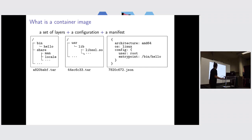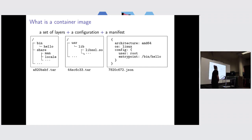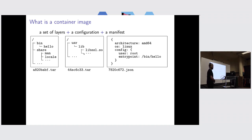The second type of artifact is a configuration file. It's basically a JSON file that describes how to run a container and also some metadata. Here we have the architecture, the OS, which is Linux, and then the configuration itself. This means that the container will be run with a root user, and if we start the container without any argument, we will start the hello binary.